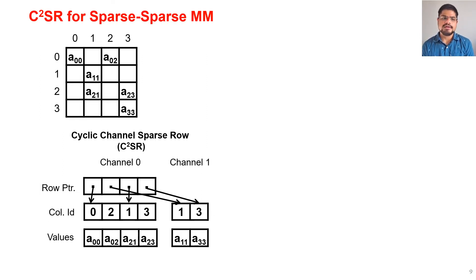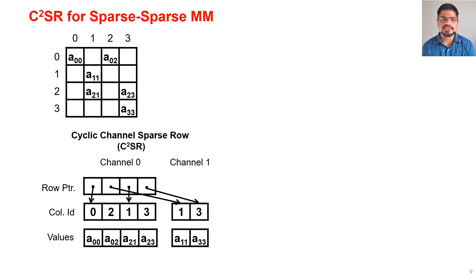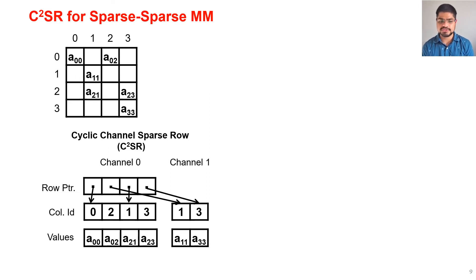In C²SR, different rows of the sparse matrix are assigned to different channels in a round-robin fashion. For example, rows 0 and 2 are assigned to channel 0, and rows 1 and 3 are assigned to channel 1. For each channel, the non-zeros from the rows assigned to it are written contiguously to its values array. For example, rows 0 and 2 are written contiguously in channel 0's values array, and rows 1 and 3 in channel 1's. A column ID array stores the column indices and row pointers store the row offsets.